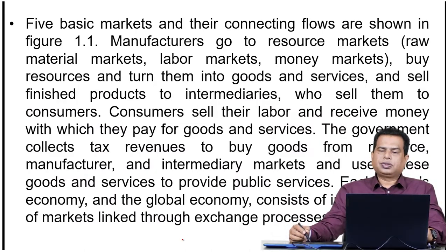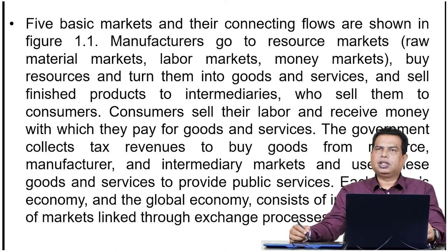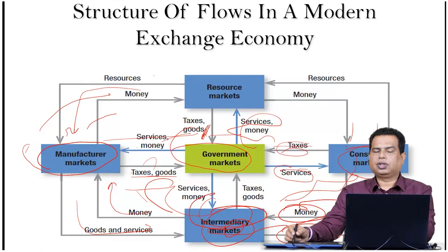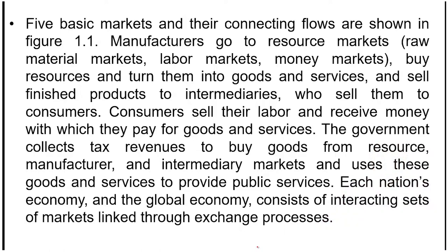Manufacturers go to the resource markets — they buy from raw material markets, labor markets, money markets, etc. They buy resources and turn them into goods and services, and sell those finished products to intermediaries, who sell them to consumers. These are the marketing intermediaries — they buy from the manufacturer and sell to consumers. The government collects tax revenues to buy goods and services from resource markets, manufacturers, and intermediary markets.